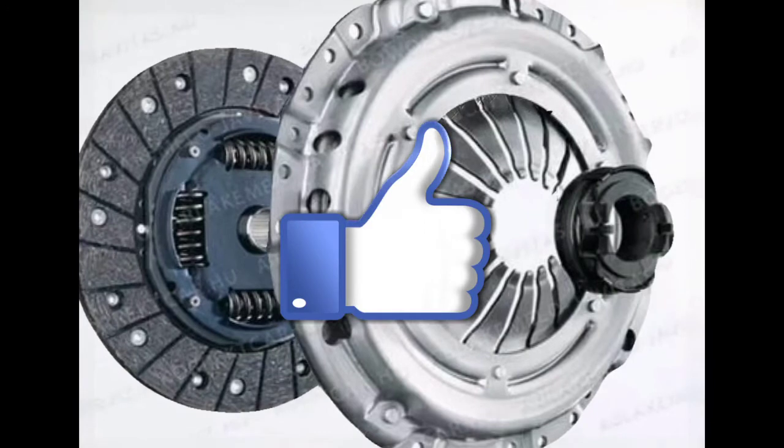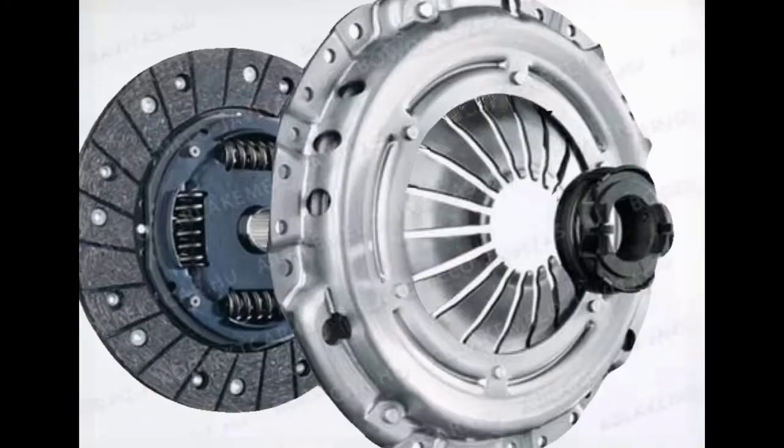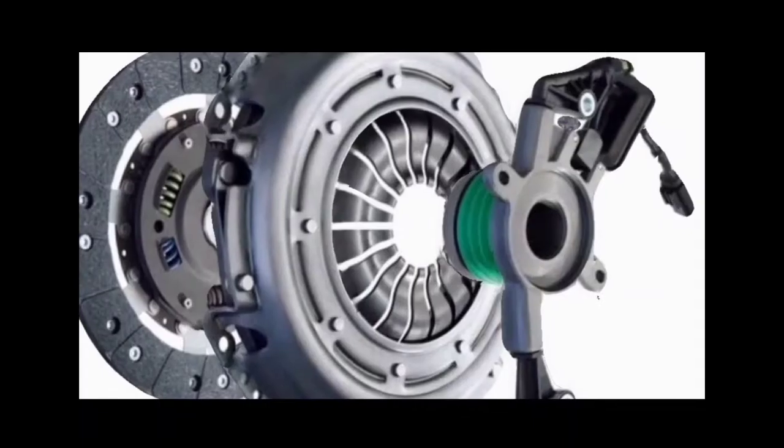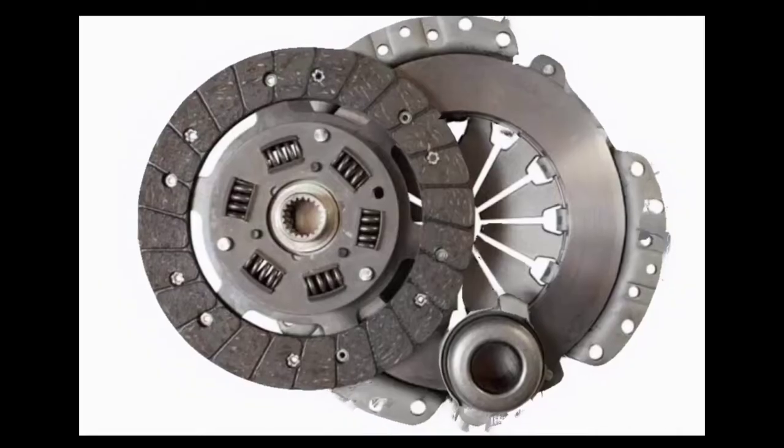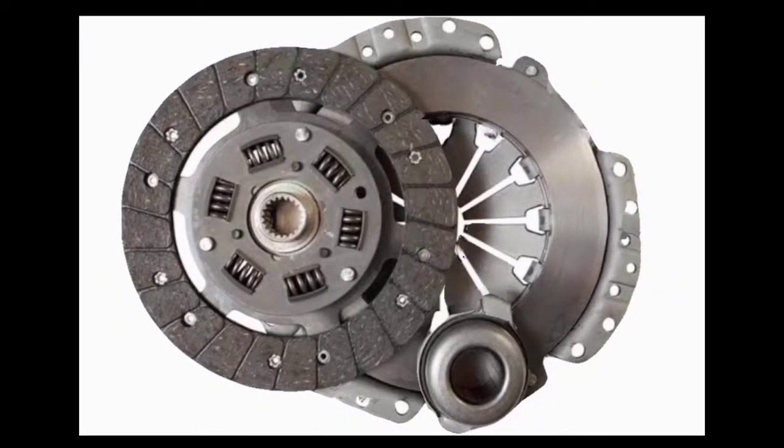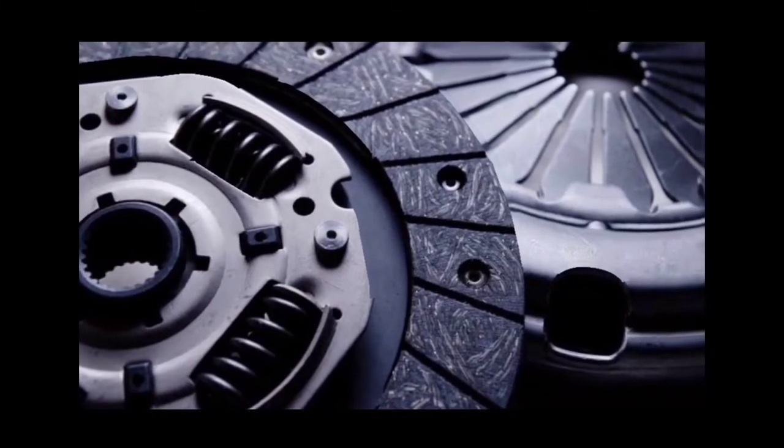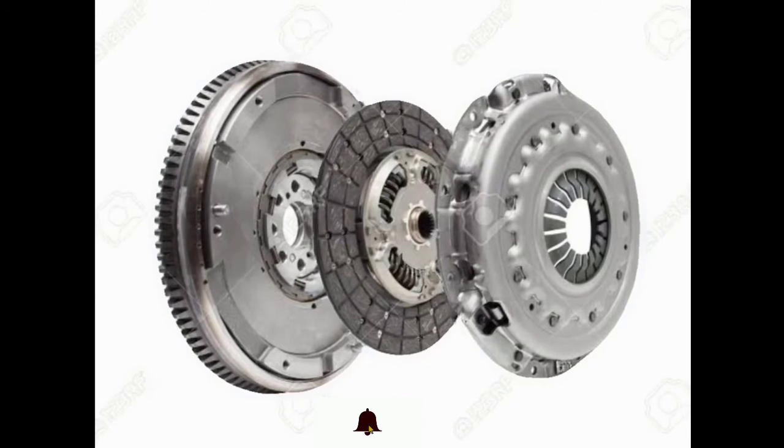In a drill, for instance, one shaft is driven by a motor and the other drives a drill chuck. The clutch connects the two shafts so they may be locked together and spin at the same speed (engaged), locked together but spinning at different speeds (slipping), or unlocked and spinning at different speeds (disengaged). A popularly known application of clutches is in automotive vehicles.